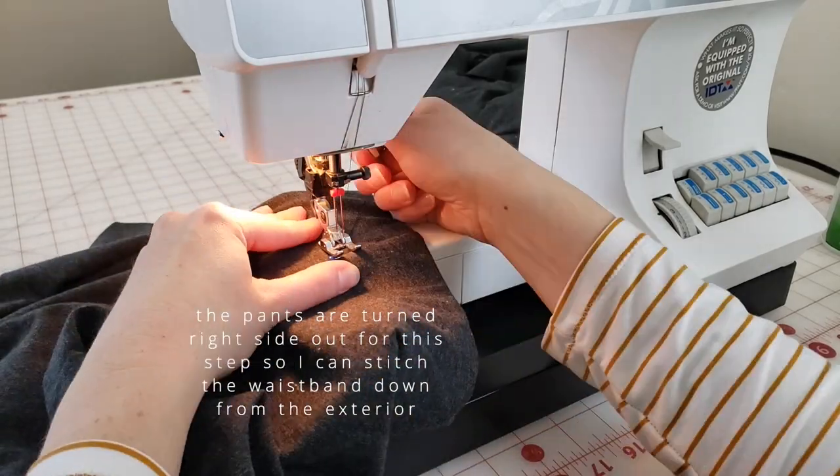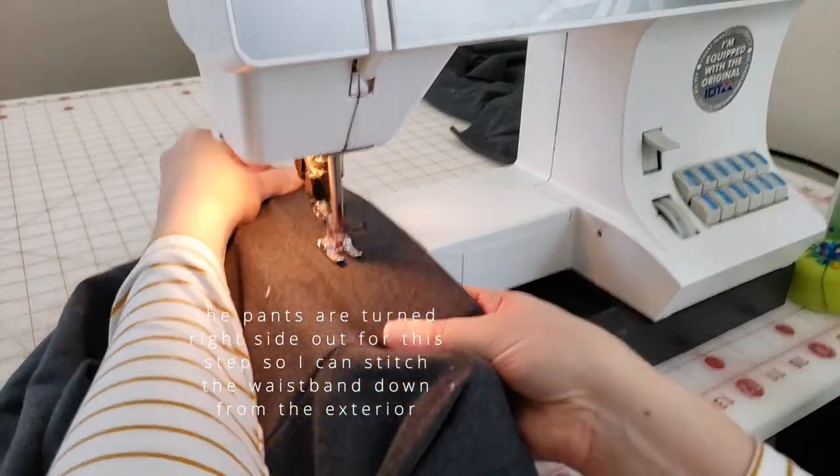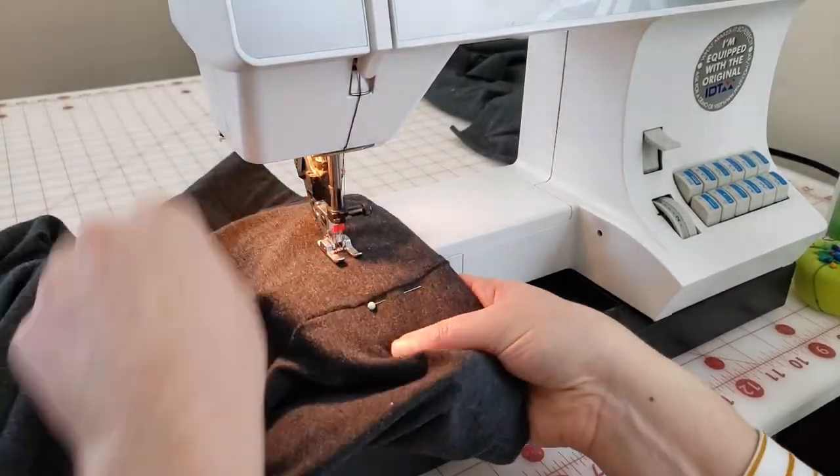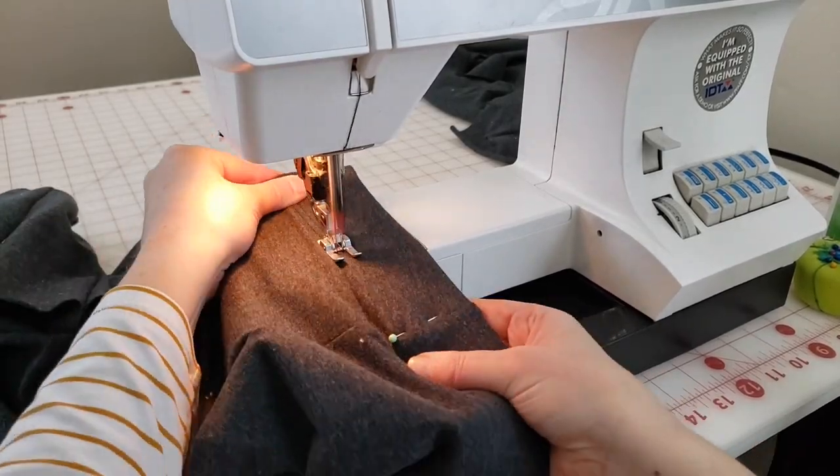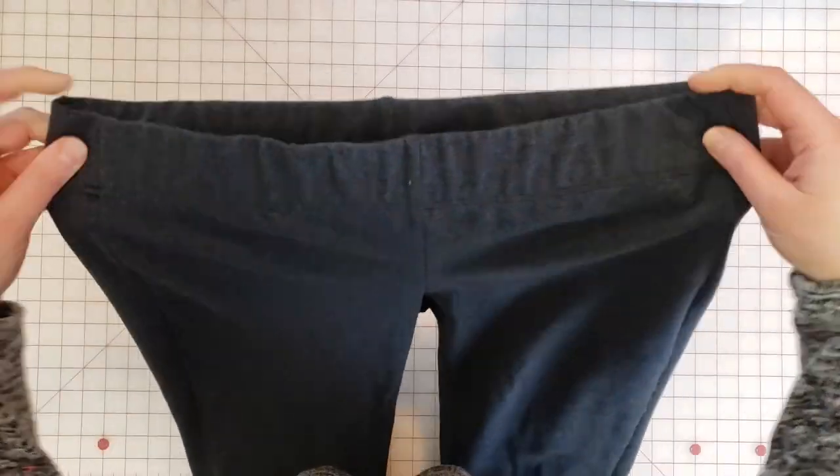Now I can flip that waistband down toward the interior of the pants so that the elastic is sandwiched between those two layers. I'm going to stitch around the entire perimeter of the waistband to attach the elastic and keep it in place. I'm using a twin needle here which will create a stretch stitch on my sewing machine and give a really nice finish. If you don't want to use this type of needle, you can just use a zigzag stitch. Now you can see that's very nicely and neatly finished and the elastic is very even all the way around.